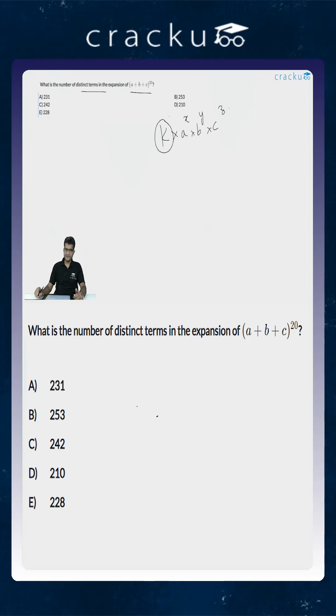This constant k can be some product of a combination. It will be the product of 20Cx times 20Cy times 20Cz. But the important constraint that we have to look at is that x + y + z will equal 20.